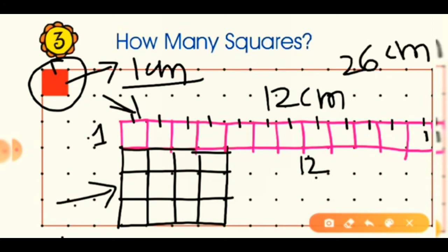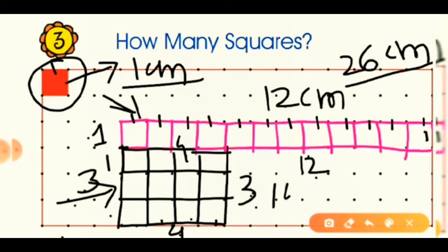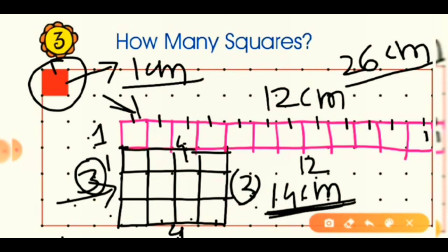To find the perimeter, add all sides: 12 plus 1 is 13, plus 12 is 25, plus 1 is 26. So the perimeter of the first rectangle is 26 centimeters. For the second rectangle, the breadth is three centimeters and the length is four centimeters. Opposite sides are equal, so four plus four is eight, and three plus three is six; eight plus six is 14. The perimeter of the second rectangle is 14 centimeters.